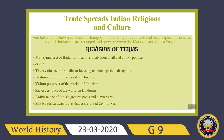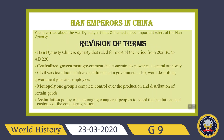We then read about Han emperors in China — the Han Dynasty and its important rulers. The Han Dynasty was a Chinese dynasty that ruled for most of the period from 200 BC to AD 220. We also read the term 'centralized government,' which means a government that concentrates power in a central authority.